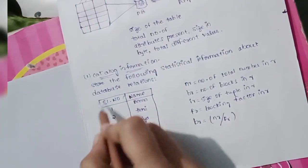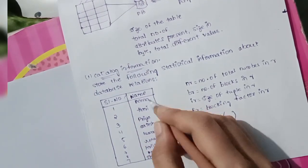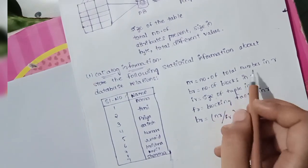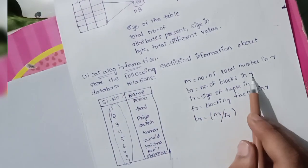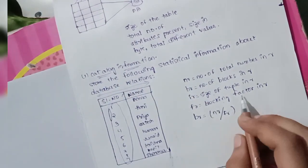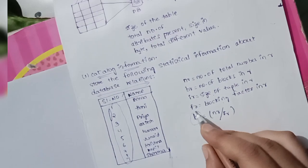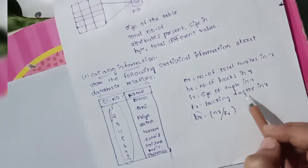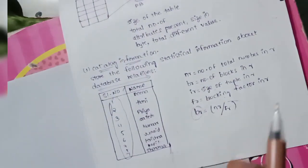For example, suppose there is a table of numbers and names — nine numbers and nine names. Here, nr means total number of tuples in relation r, which is nine. br means number of blocks in relation r. lr is the size of a tuple in the relation, and fr is the blocking factor in relation r. To find br, the formula is: br = nr / fr, that is, number of tuples in r divided by the blocking factor in relation r.